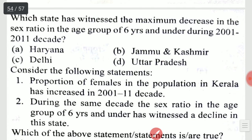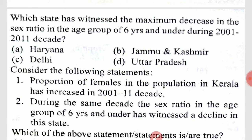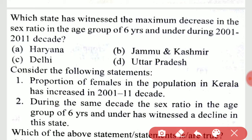Which state has witnessed the maximum decrease in sex ratio in the age group of six years and under during the 2001 to 2011 decade? It is Jammu and Kashmir.